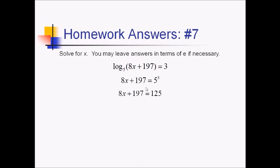And then let's just solve for x now. So subtract 197, that's going to be negative 72. Divide that by 8, so x equals negative 9. And just plugging that in real quick to double check, that's not going to give us any negative numbers when we evaluate the whole logarithm. So we're safe.